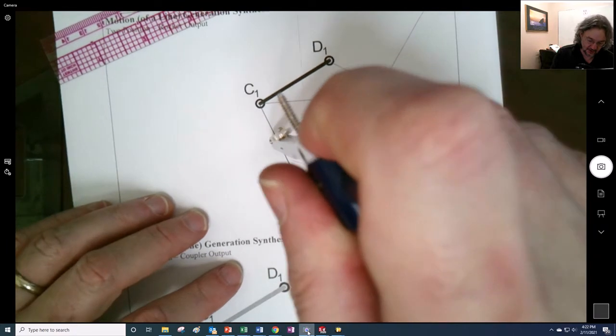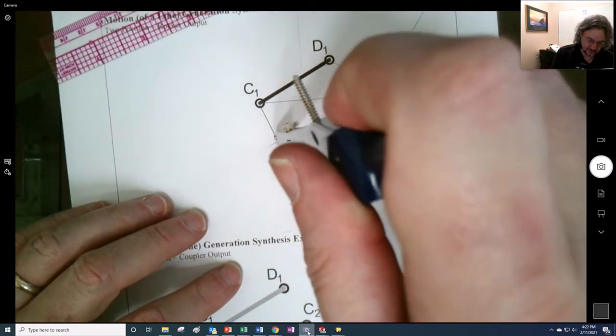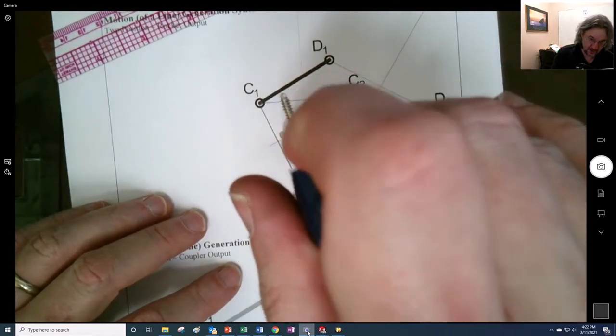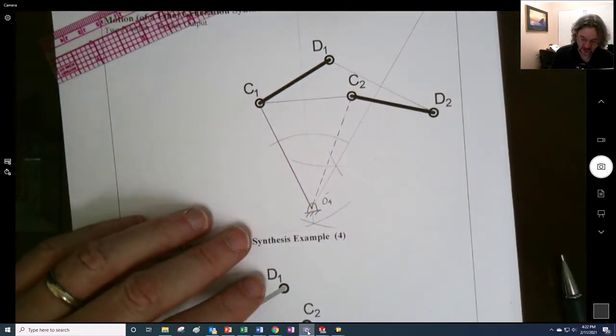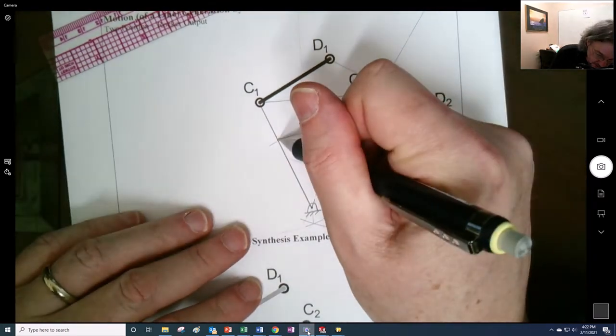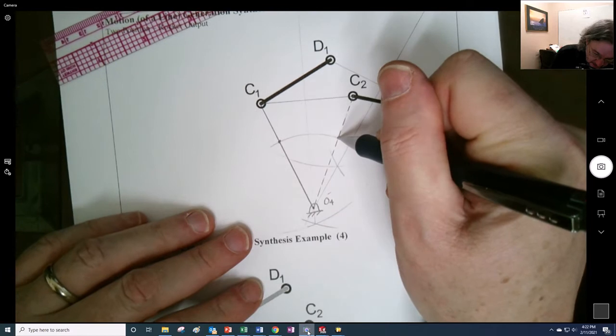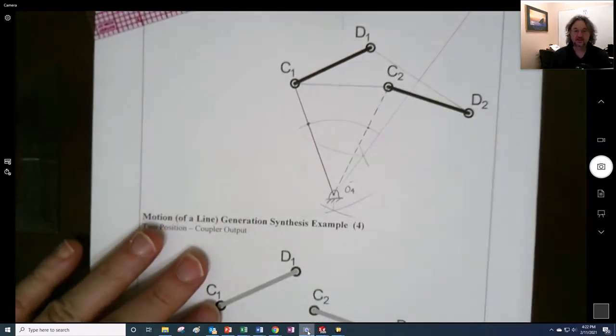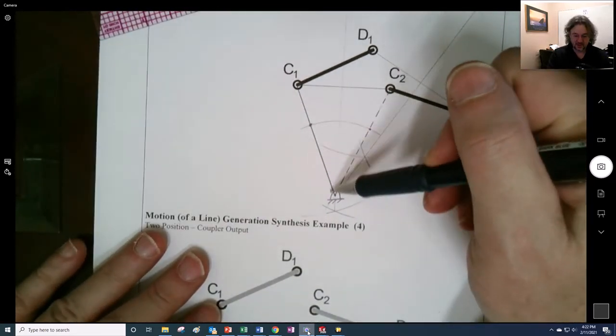So, I don't want to make it too short. But right here, where these two intersect, right here and right here, right there, that's going to be, this is going to now be the rocker. And it's very similar.